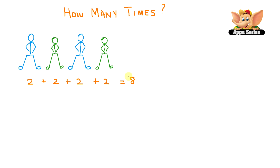That would be four children and each child has two legs. If you multiply it, it is 4 times 2 equals 8. That is because there are four 2's being added.